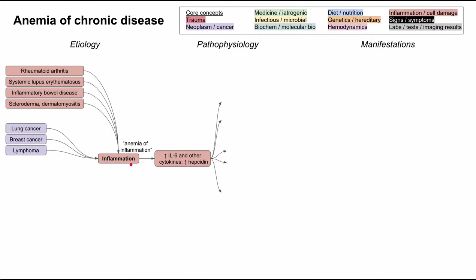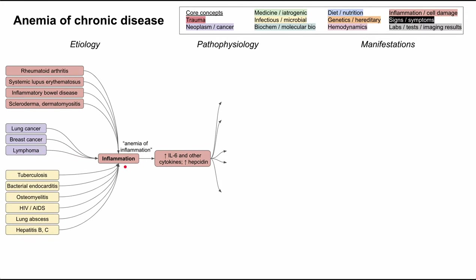Malignancies, neoplasms, and cancers can also cause this — lung cancer, breast cancer, and lymphoma have all been associated with anemia of chronic disease. There are also a bunch of infectious or microbial disorders, all chronic infectious conditions like tuberculosis, bacterial endocarditis, osteomyelitis (a bone infection), HIV/AIDS, lung abscess, and chronic hepatitis infections like hepatitis B and hepatitis C.